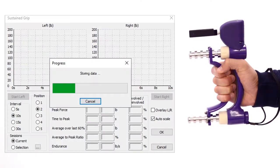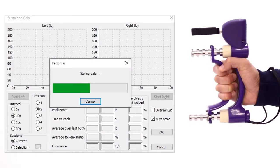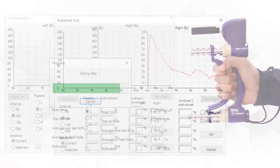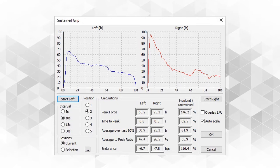Sustained grip test measures force over time in 5, 10, 15, and 30 second intervals and calculates peak force, time to peak, average, and fatigue rate.